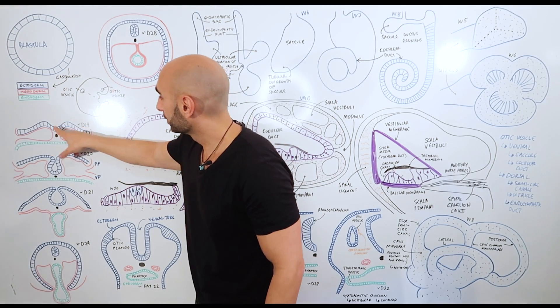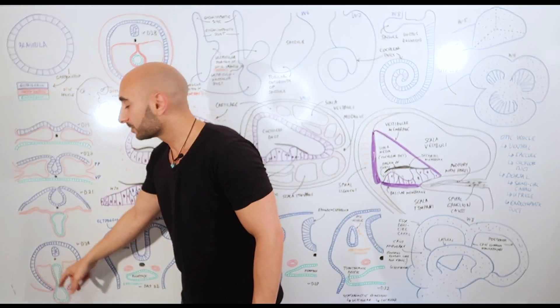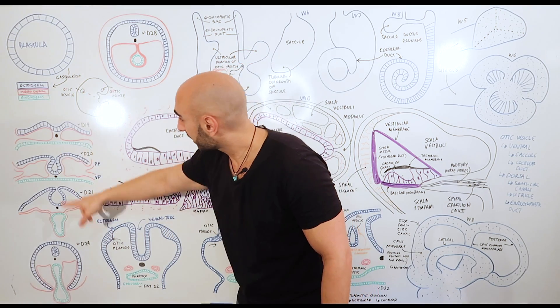Ectoderm in blue, mesoderm in red, endoderm in green, and these are color-coded.